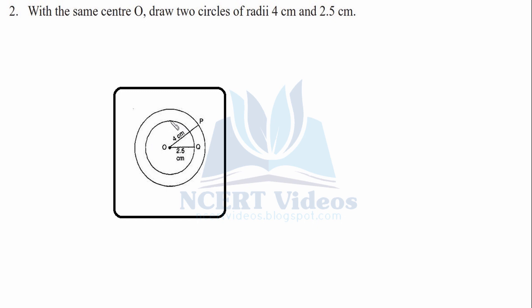First of all, you will take 2.5 cm and make a full revolution and mark it O. Now, you will measure on the ruler a distance of 4 cm with the help of compasses and you will again make a revolution keeping in mind that center remains O. This is how you will make two circles with the same center O.